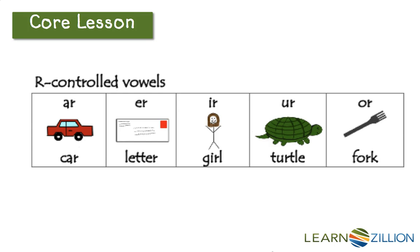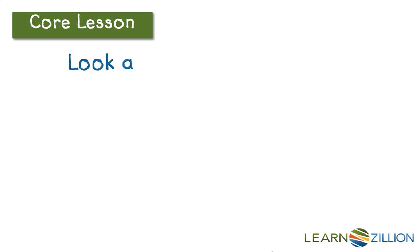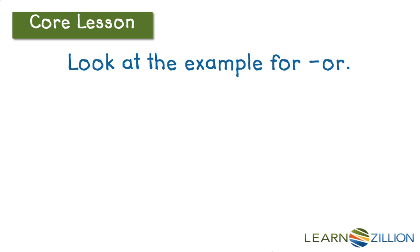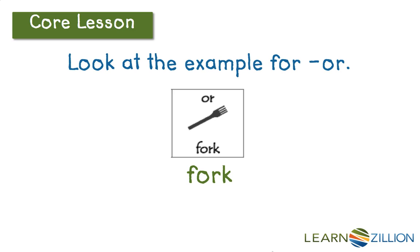In this lesson, we're going to focus on words with the OR syllable. Look at your vowel teams chart. Look at the example for OR. The picture is a fork, and we can use this to help us figure out what sound OR makes. Since we know that this word is fork, let's break it up into the sounds that we hear: F-OR-K, fork. So the OR says OR. Say it with me: OR says OR.